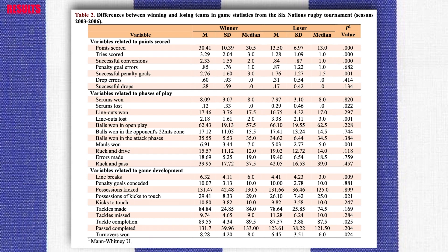For the third group of variables, game development, winning teams had significantly higher averages for the following variables: line break possessions, kick tackle completion and turnovers won. They also had higher averages, although insignificantly so, for the variables kicks to touch, penalty goals conceded, tackles made and errors made. Losing teams had insignificantly higher averages for the variables tackles missed and passes completed.